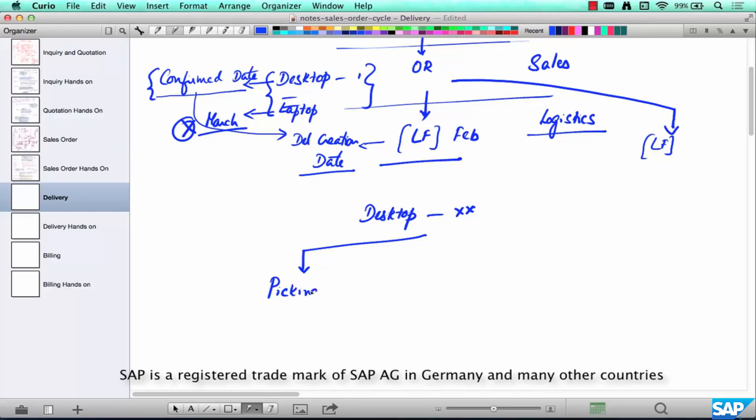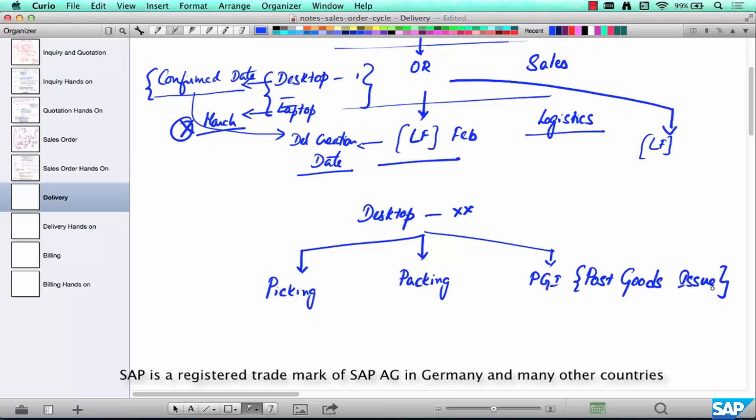another is called Packing, another is PGI or Post Goods Issue.